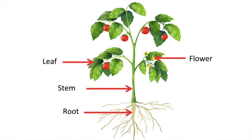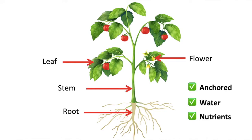Roots. The roots of a plant help to keep the plant anchored into the ground, which prevents it from being blown away. Roots are also important for nutrition because they contain root hairs, which absorb water and minerals from the soil.